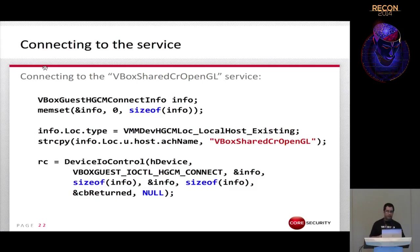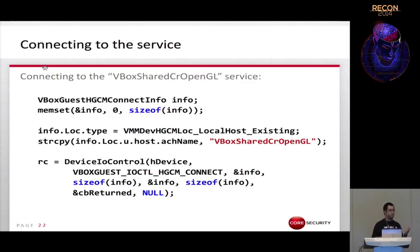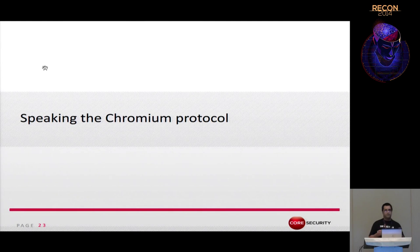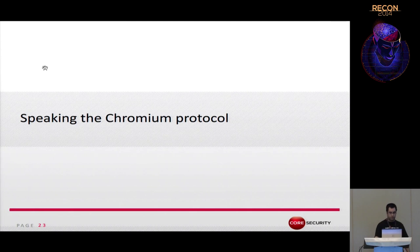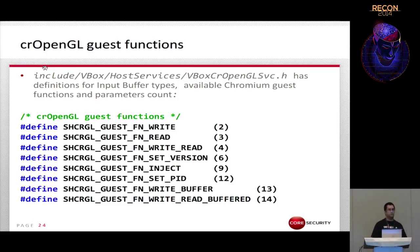A Chromium client running inside the VM can connect to the 3D acceleration service exposed by the Chromium server by calling DeviceIoControl to send an HGCM Connect message, specifying the service name 'bbox share cr openshield' in the input buffer. The 3D acceleration service exposes remotely invocable functions such as fn_write, fn_read, fn_set_pid, etc. An HGCM Call sends the function identifier, the number of parameters, and the parameters themselves to remotely invoke one of these functions.